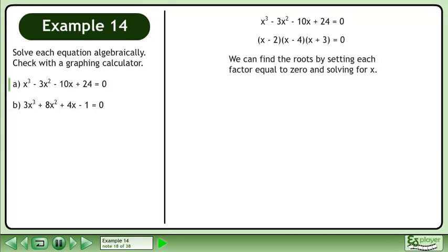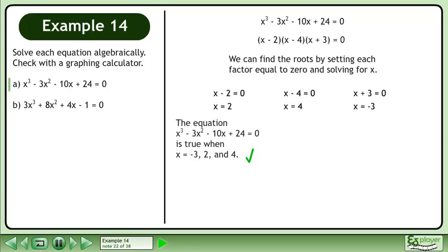We can find the roots by setting each factor equal to zero and solving for x. x minus 2 equals 0 gives the root x equals 2. x minus 4 equals 0 gives the root x equals 4. And x plus 3 equals 0 gives the root x equals negative 3.